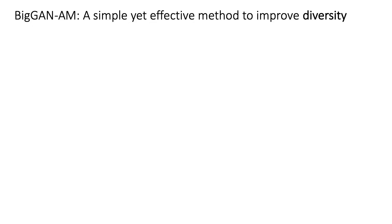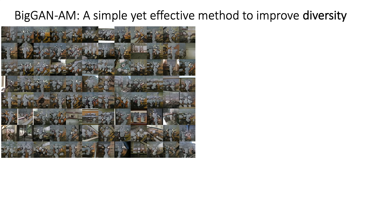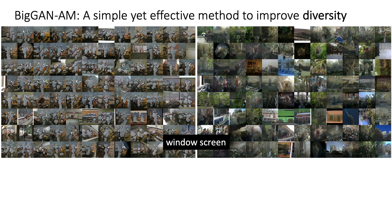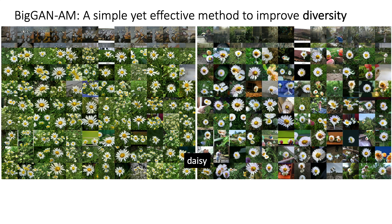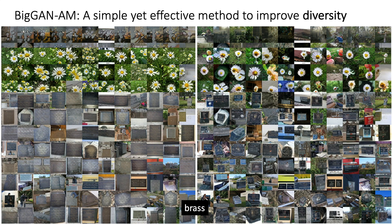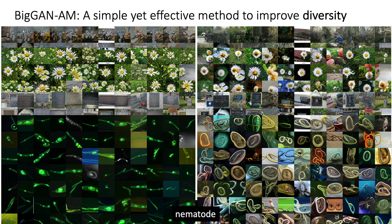In this research, we propose a simple yet effective method to improve sample diversity. Our method turns the set of unrealistic window screen samples into a diverse set in different lighting and poses. The generated daisies appear in a diverse set of backgrounds. Similarly, improvement can be seen in nematode samples where the subject appears in a variety of colors and shapes.